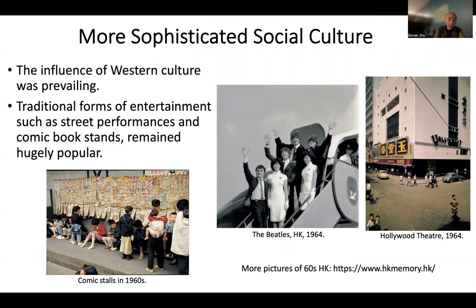From a cultural perspective, people of Hong Kong in the 1960s began to experience a lifestyle that, in both material and spiritual terms, was becoming increasingly sophisticated. One good example is the influence of Western culture — mini skirts, bell-bottom trousers, and platform shoes were typical fashion icons of 1960s Hong Kong. The Beatles performed in Hong Kong and Hollywood theaters appeared the same year. But at the same time, traditional forms of entertainment such as street performances and street comic stores remained hugely popular. In general, culture became more mixed, blending Western influence with traditional entertainment.